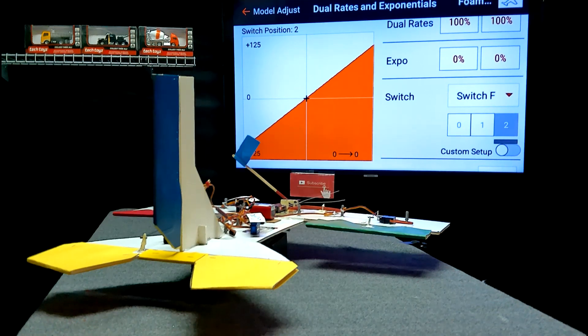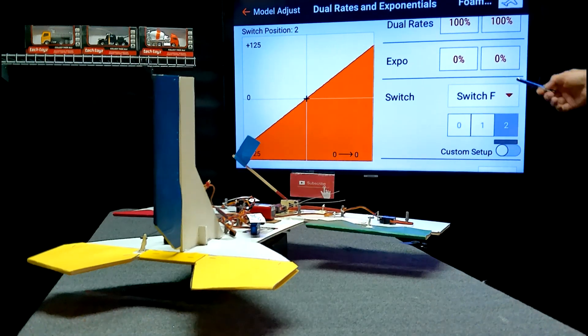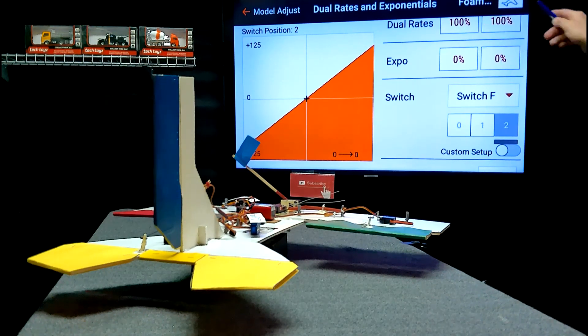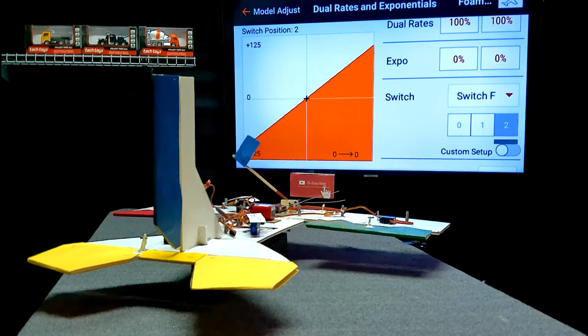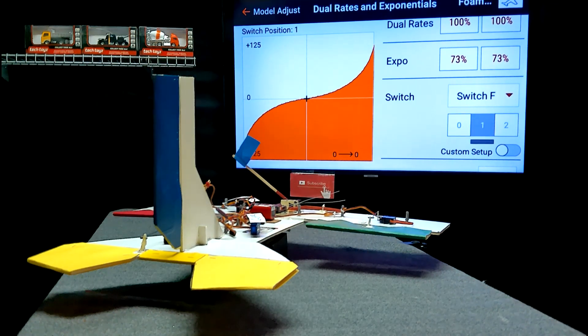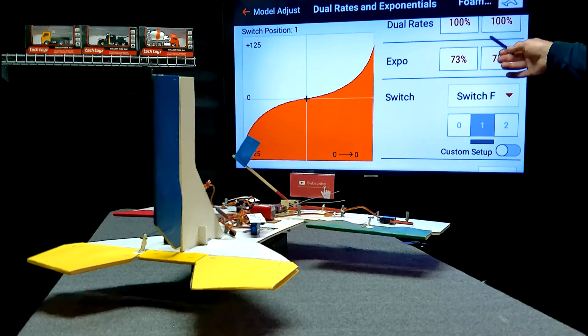So for demonstration purposes, we've got two dual rates set up, two choices. One, on our elevator, we have 100% of the travel and zero Expo. On the second setting, we have 100% of the travel and a positive 73% Expo.